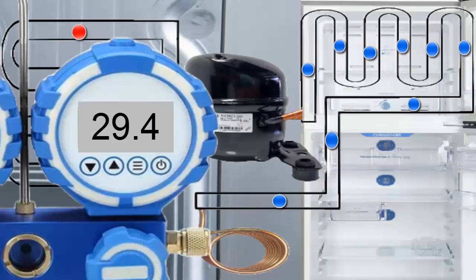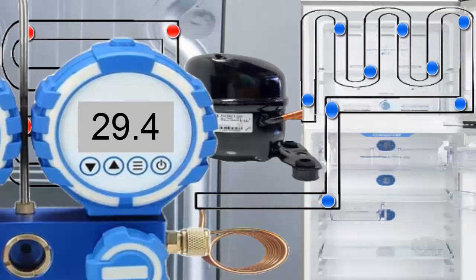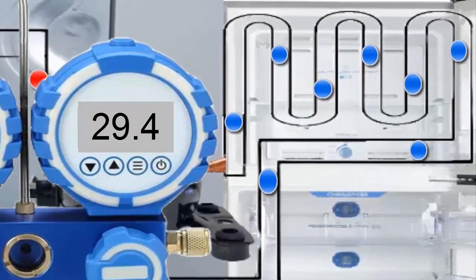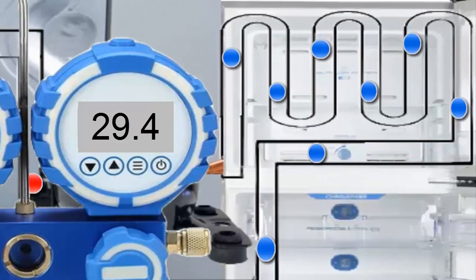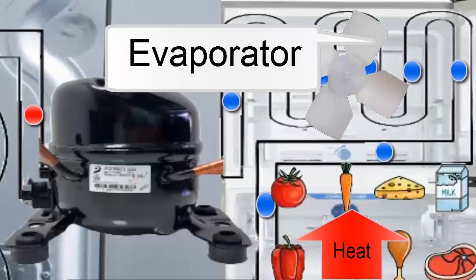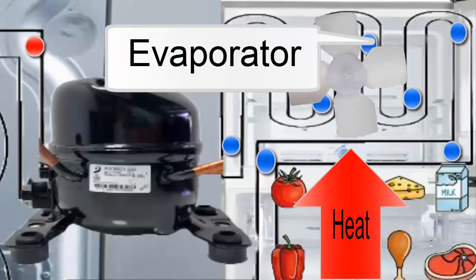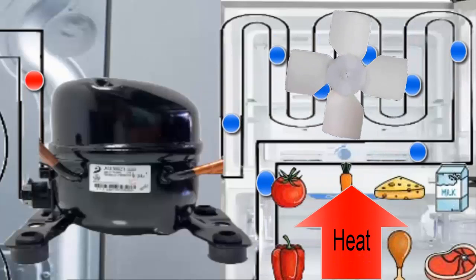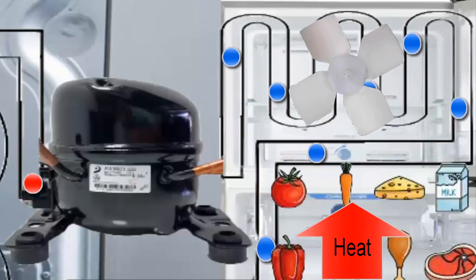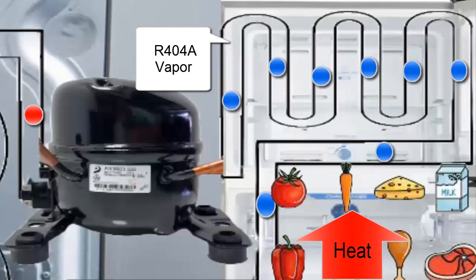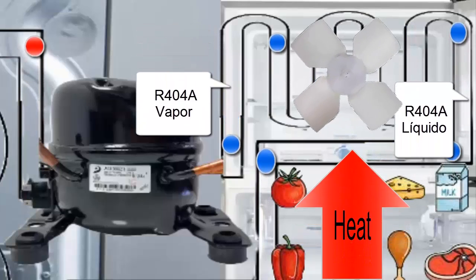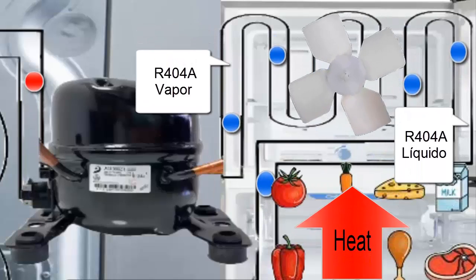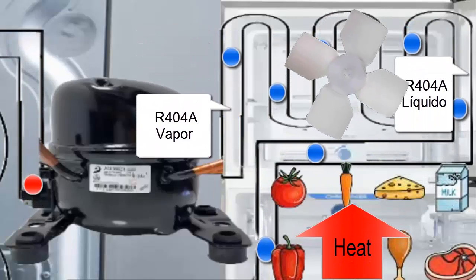The R404A refrigerant enters the evaporator in a liquid state at a pressure of 29.4 pounds per square inch. With this pressure, it is achieved that the R404A in the evaporator has a temperature of minus 20 degrees Celsius. With this low temperature and the help of the fan, the heat from the food quickly passes to the refrigerant R404A, causing it to evaporate.